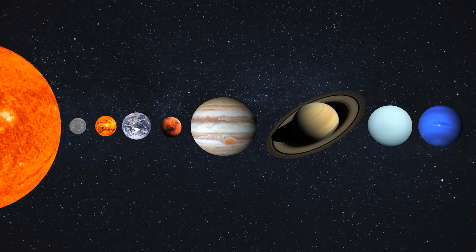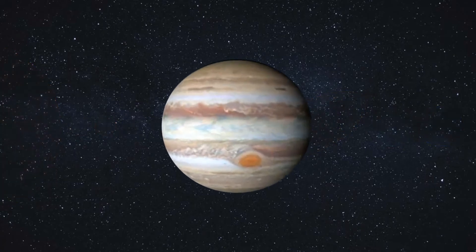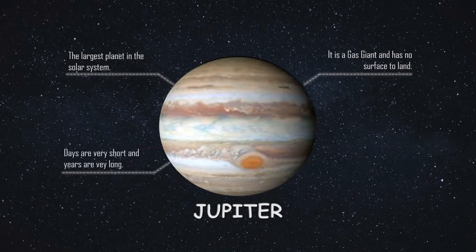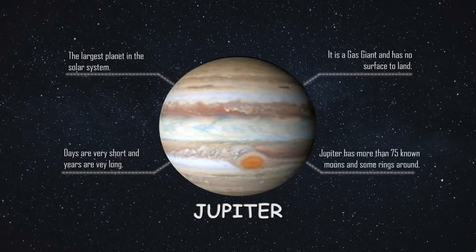The fifth planet of the solar system is Jupiter. Jupiter is the largest planet of the solar system and it is made up of gas — it does not have any solid surface to land on. Days on Jupiter are short because its spinning speed around its own axis is very high. Jupiter has 75 known moons and some rings around it.